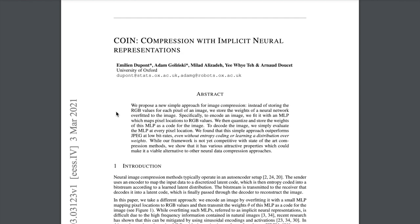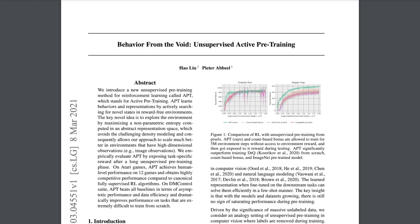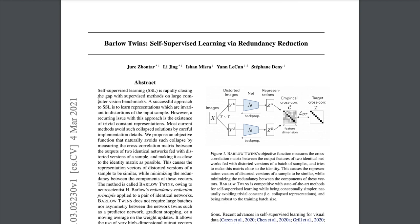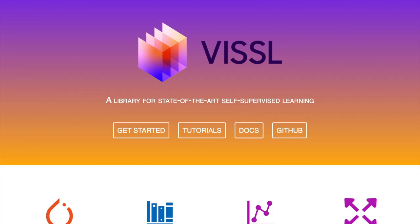There's been a really exciting new way to compress data with deep neural networks. There's a new technique for doing curiosity exploration in reinforcement learning using self-supervised learning and contrastive learning. There's a new framework for self-supervised learning called Barlow Twins, which looks like an extension on the Bootstrap Your Own Latent framework. There's also a new open source library from PyTorch and Facebook called Vissl, a library for state-of-the-art self-supervised learning with some examples.